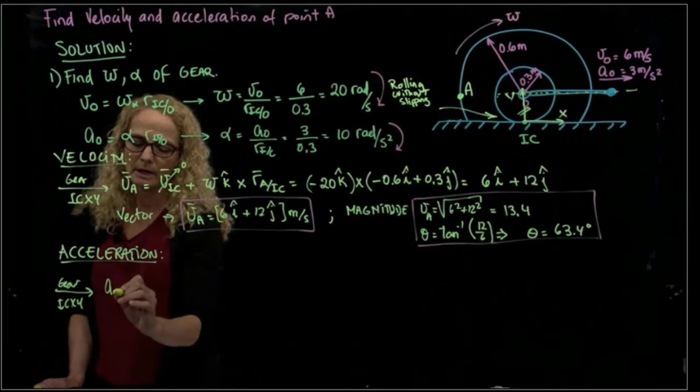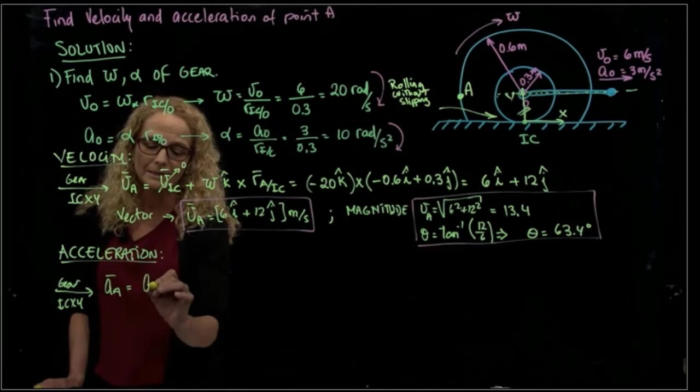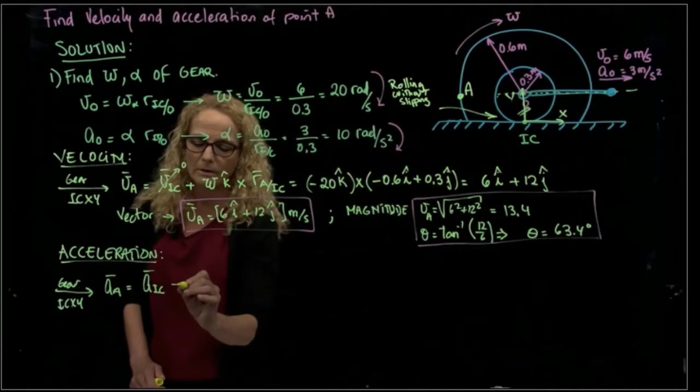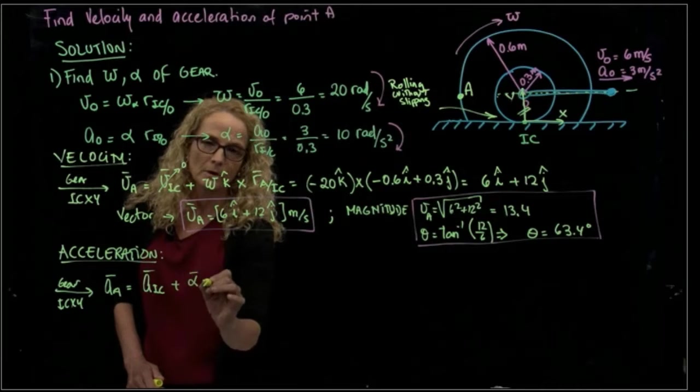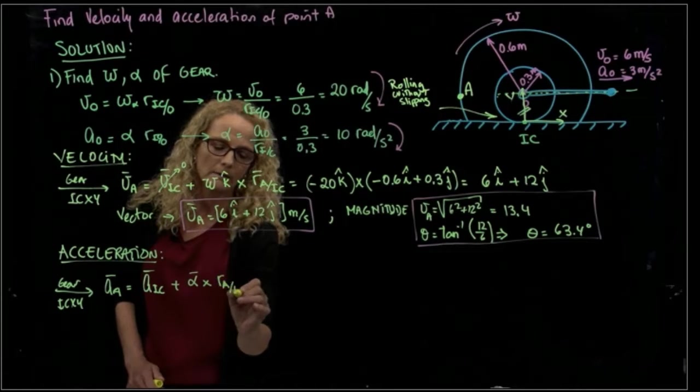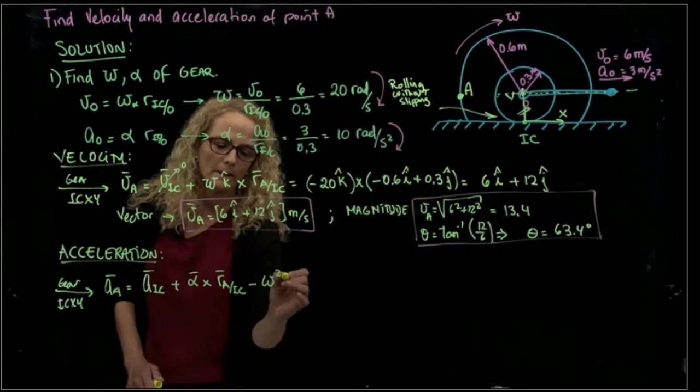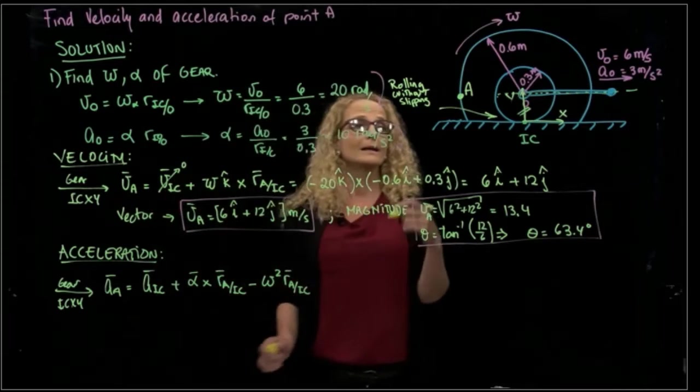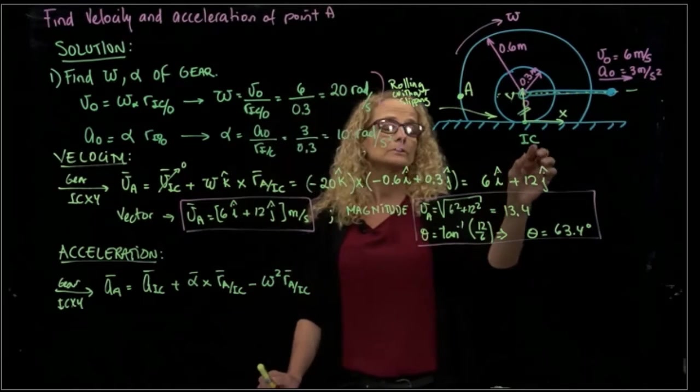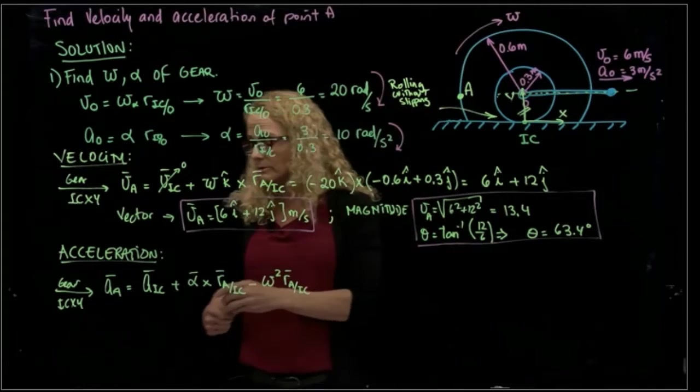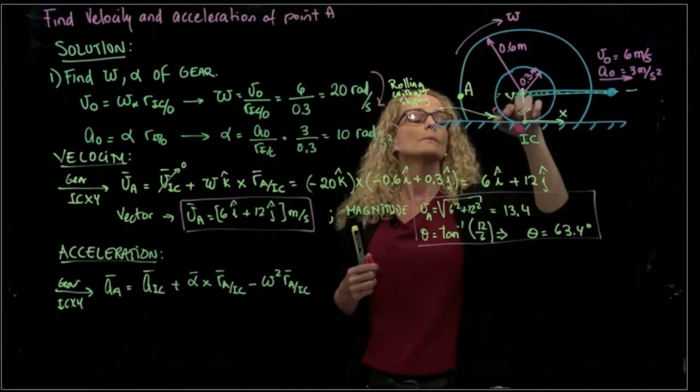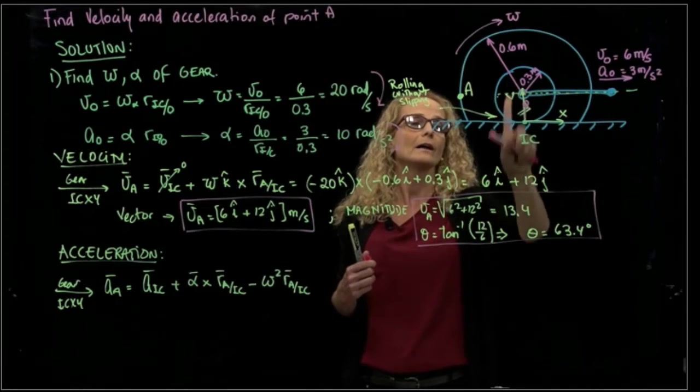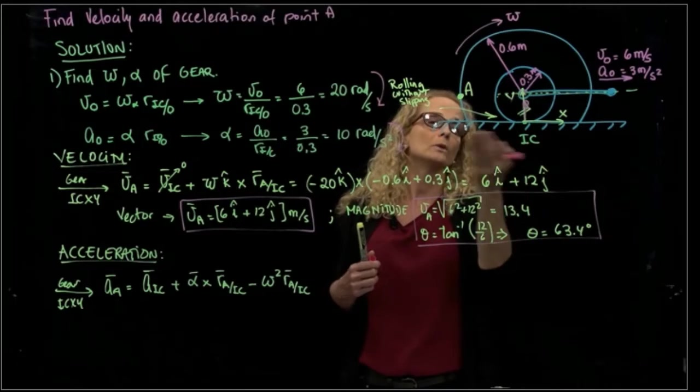And the acceleration in A will be equals to the acceleration of that instant center of rotation plus alpha cross r_A respect to IC minus omega squared r_AIC. We have to remember that even though the velocity of the instant center of rotation is zero, not the acceleration. The acceleration we have, well this moves, you remember that moves as a cycloid. And then we have acceleration which is perpendicular to the surface.